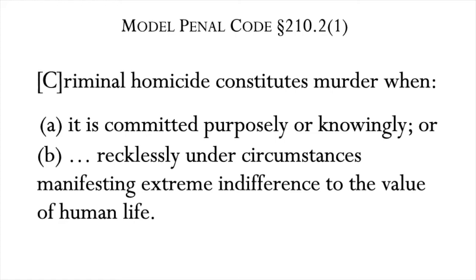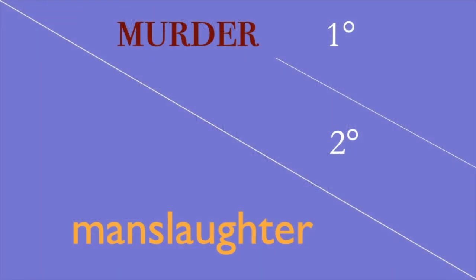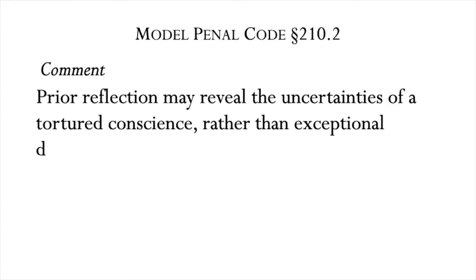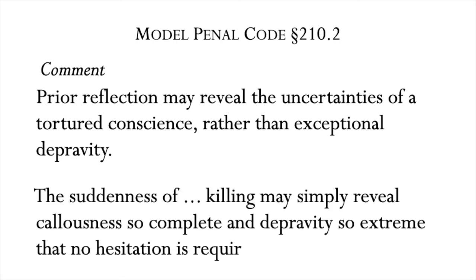So, malice aforethought is out. Out also is the distinction between degrees of murder. The distinction between murder and manslaughter is retained, as we shall see. The reason the premeditation formula is junked should be fairly clear from our discussion of the cases that try to apply it — it doesn't draw the line where it ought to. As the drafters observe, premeditation is not a reliable sign that a homicide belongs among the more menacing. Prior reflection may reveal the uncertainties of a tortured conscience rather than exceptional depravity. Think of the case of the son deciding to ease his terminally ill, pain-wracked father into a better world.